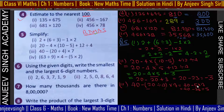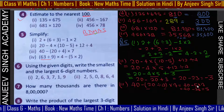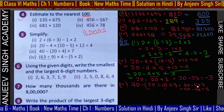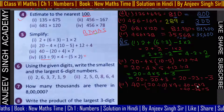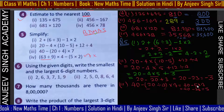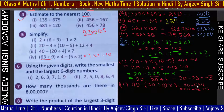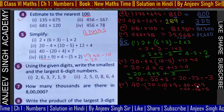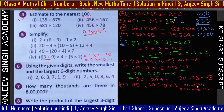Last question: पहले bracket sort out करना है। 9×7 = 63, multiply 4। Minus 5×2 = 10। Multiplication पहले: 4×7 = 28, minus 10। तो 28 minus 10 = 18। Answer 18।